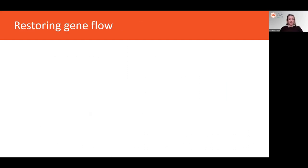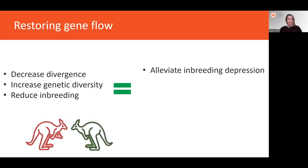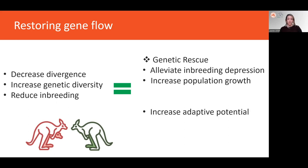In many cases, these negative effects can at least be partially alleviated by restoring gene flow between populations. Restoring gene flow by connecting isolated populations is going to reduce the divergence between those populations. It'll increase the genetic diversity within those populations, and by introducing unrelated individuals into the population, it can reduce inbreeding. So in doing so, restoring gene flow can alleviate inbreeding depression and thus elevate population growth. This is sometimes referred to as genetic rescue. By increasing genetic diversity, restoring gene flow can also increase adaptive potential, enabling populations to more readily respond to environmental change. This is sometimes called evolutionary rescue.